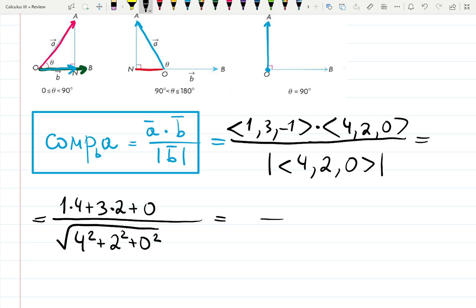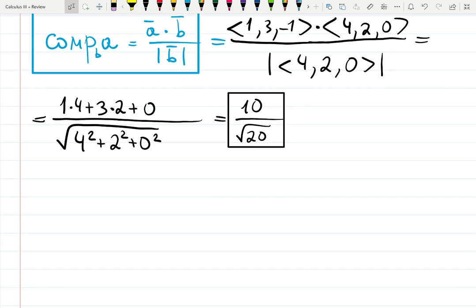Then it's going to be 4 plus 6 is 10, and then the square root of 16 plus 4 is 20. This actually can be simplified, but if you want to rationalize the denominator, I don't like doing that to be honest, but sometimes instructors ask people to do that. So let me do it really fast.